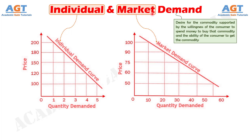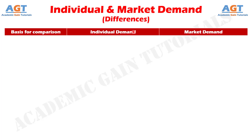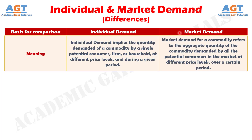So, let's look into the basic differences between individual demand and market demand in a tabular form. Difference number 1: Individual demand connotes the quantity demanded by a single consumer for any given product at any given price, at any point in time. On the other hand, market demand is the aggregate quantity that all the consumers of a commodity are willing and able to buy at a point of time in a market at different possible prices.